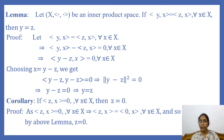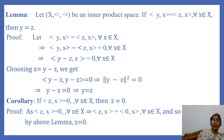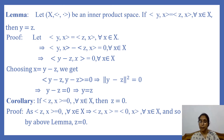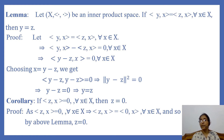Now we shall prove a corollary: if ⟨z, x⟩ = 0 for every x in X, then z = 0. Since ⟨0, x⟩ = 0, we can write ⟨z, x⟩ = ⟨0, x⟩ for every x in X, and so by the above lemma we have z = 0.